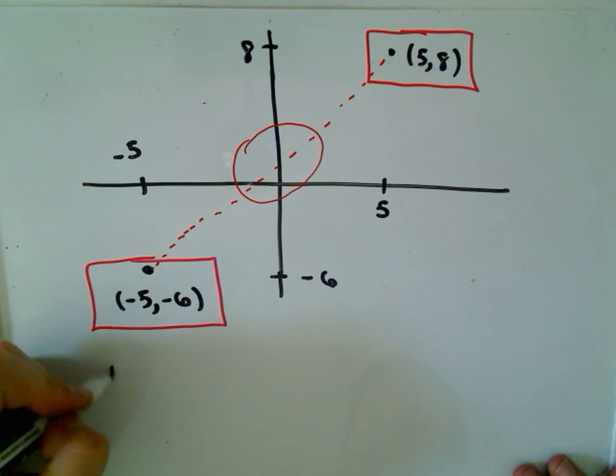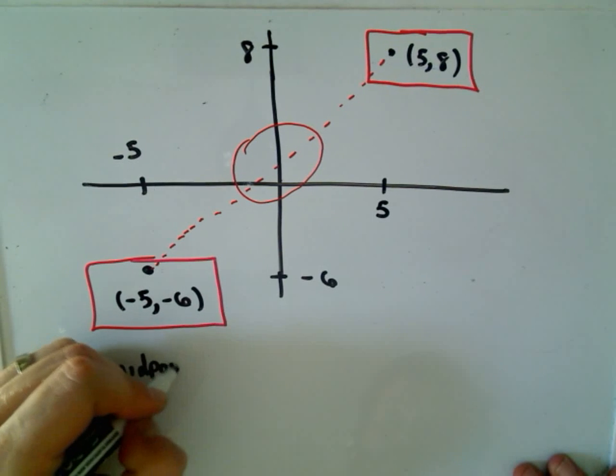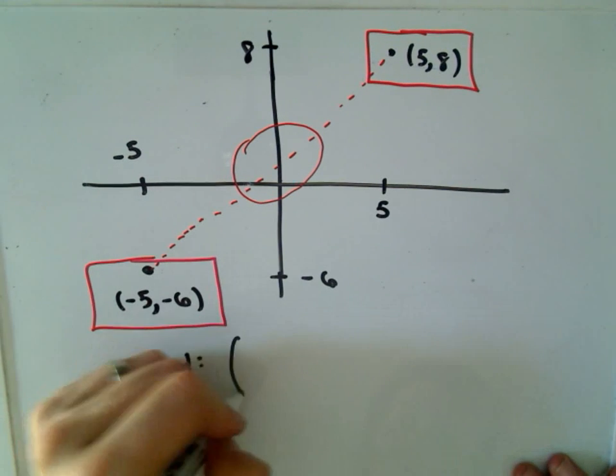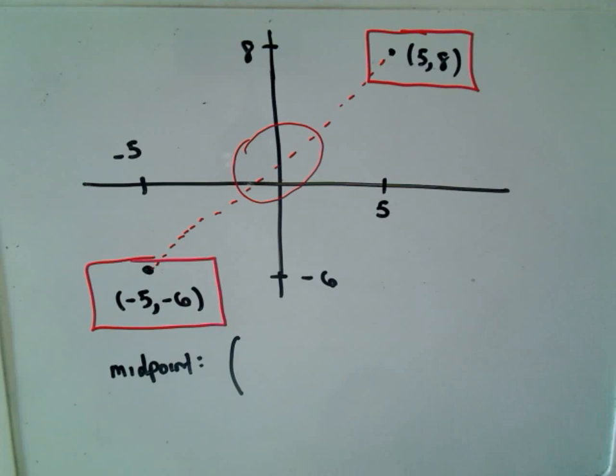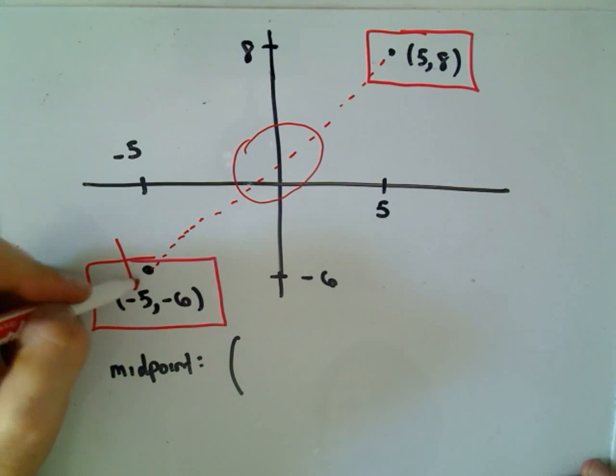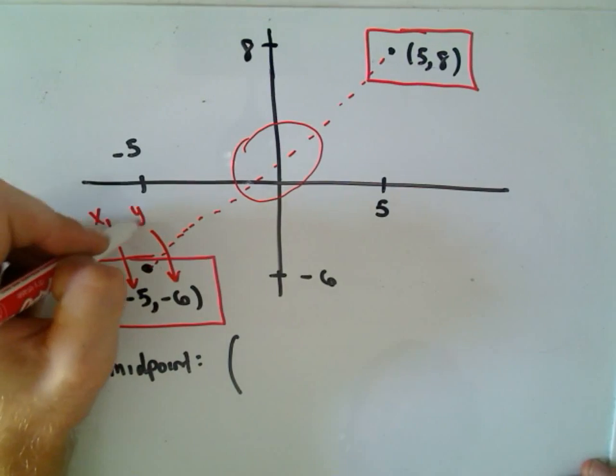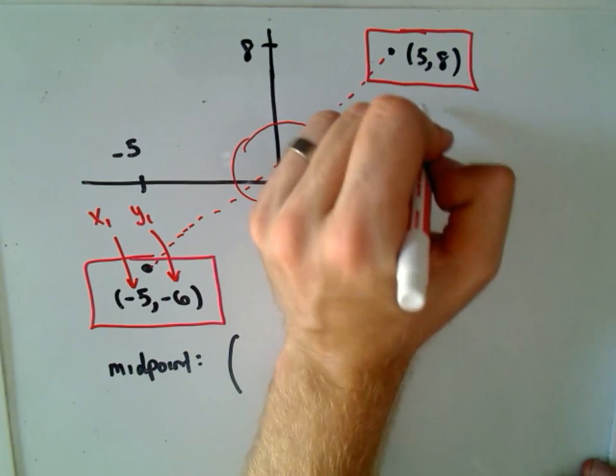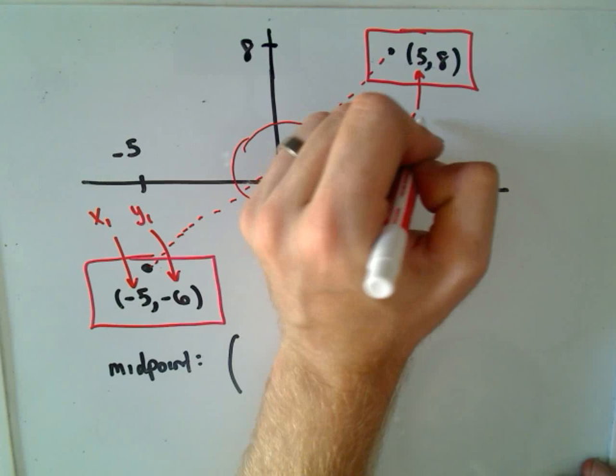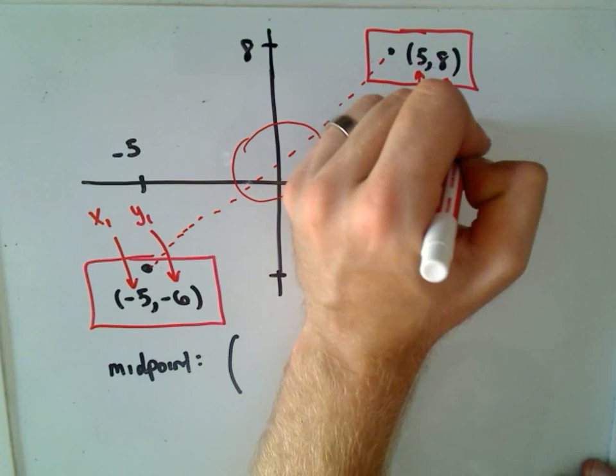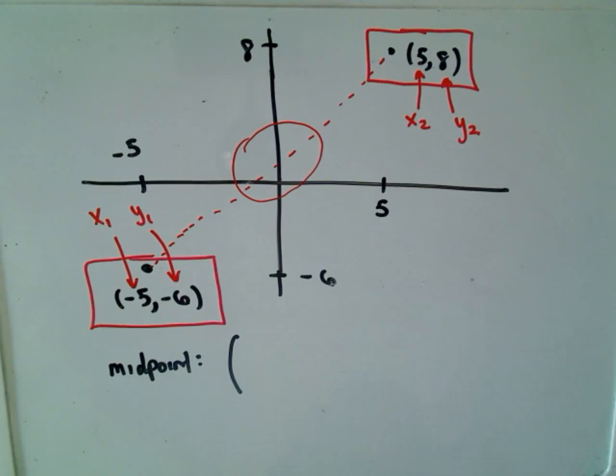So it simply says, again, to find the midpoint, piece of cake, all we have to do is add the x coordinates. So maybe we can label them as well. So this will be x sub 1, this will be the point y sub 1. Again, these are kind of generic labels. It doesn't matter which one you call x1, y1, which one you call x2, y2.